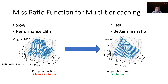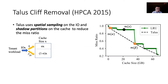To understand how we remove the cliffs, let's go back to the single-tier case and look at Talos. Talos is an algorithm that removes performance cliffs for single-tier caching. It uses spatial sampling on the IO and shadow partitions on the cache to reduce the miss ratio. According to Talos, if we know the miss ratio value at cache size alpha and beta, and we set the sampling ratio and partition ratio accordingly, we can lower the original miss ratio m(x) to m_Talos(x). If we apply Talos to every cache configuration, we obtain the new Talos miss ratio, which is effectively the convex hull of the original MRC.